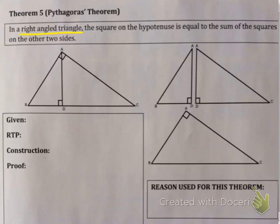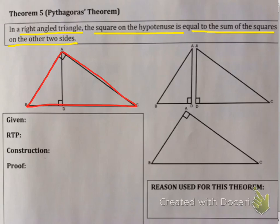You know what Pythagoras' Theorem says — in a right-angled triangle, the square on the hypotenuse is equal to the sum of the squares on the other two sides. Now if you have a right-angled triangle, ABC, with the right angle at A, and I draw down a perpendicular line so that it drops down to D, I basically divide my triangle into three triangles.